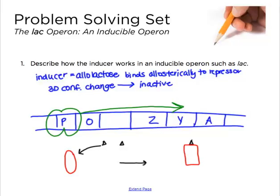With the operator free, RNA polymerase can come over to the promoter and transcribe the operon. So effectively allolactose, which isomerizes from regular lactose entering the cell, inactivates the repressor protein and turns on the operon. The operator is free, the promoter can bind RNA polymerase, and everything is turned on.